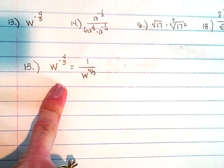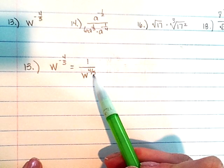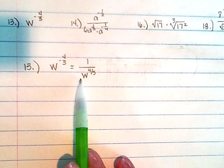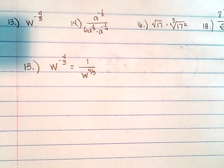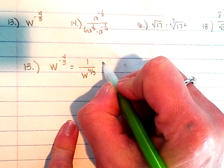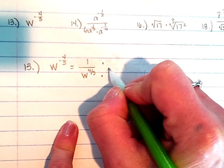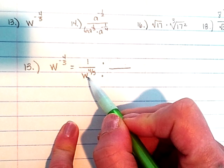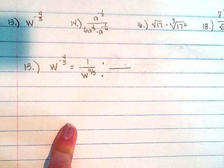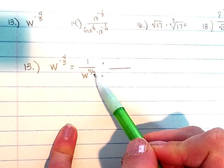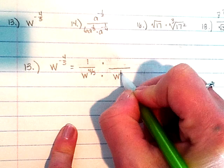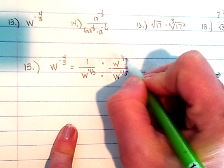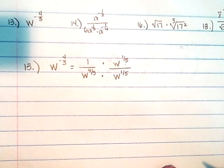That opens up a new problem because we're not allowed to have a radical in the denominator. When I have the four-fifths power in the denominator, that means I have the fifth root of w, which is not allowed. So I'm going to have to go through the rationalization process. If I have four out of five already, I need one more to make this a whole one, so I'm going to rationalize by multiplying the top and the bottom by w to the one-fifth power.